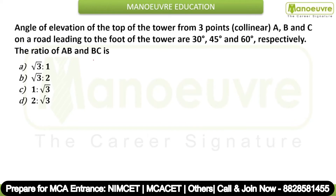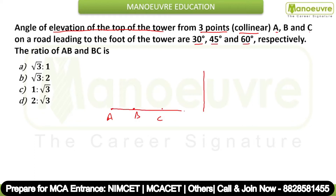In this question, the angle of elevation of the top of a tower from three collinear points A, B, and C on a road leading to the foot of the tower are 30 degrees, 45 degrees, and 60 degrees respectively. We have to find the ratio of AB to BC. We have three collinear points on a road at certain distances from the tower. Draw the figure and join all the points.